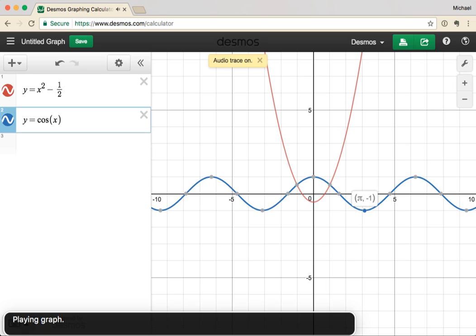It's worth lingering here to call out a few details. First, we trace along the graph from left to right. Next, the tone changes to indicate the vertical position of the graph.